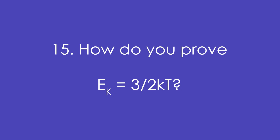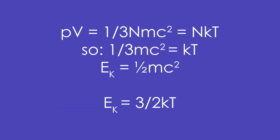Question 15: How do you prove that E_K = ³⁄₂ kT? We know PV = ⅓NMc². Since PV also equals NkT, cancelling the Ns gives ⅓Mc² = kT. That looks similar to ½Mc², which is just the kinetic energy equation, so therefore E_K = ³⁄₂ kT.